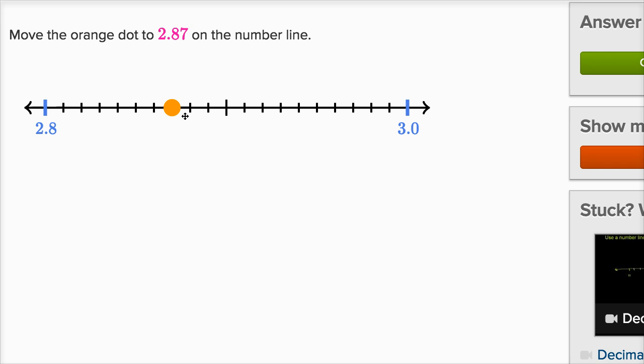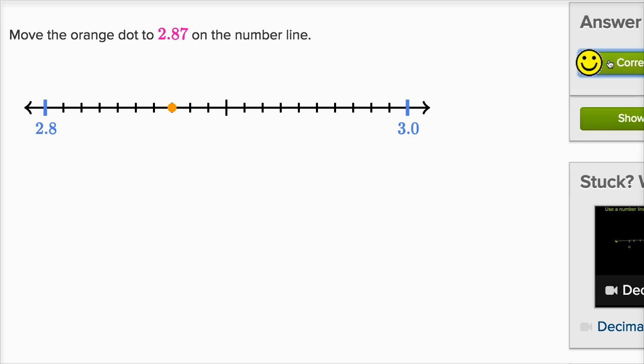And we could just check. This would be 2.88, 2.89, 2.9, which is exactly, or 2.90, which is exactly halfway between 2.8 and 3.0. So I'm feeling good about that. Let's check our answer.